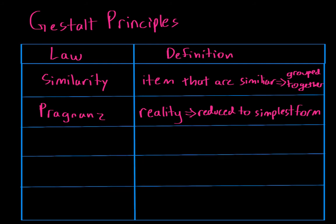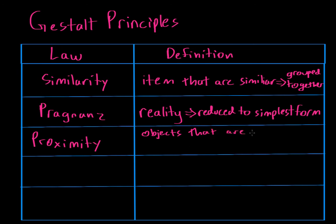The third Gestalt Principle is the law of proximity. The law of proximity basically says that objects that are close to one another are grouped together.